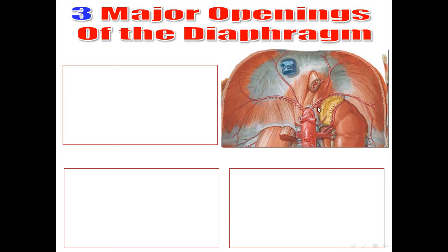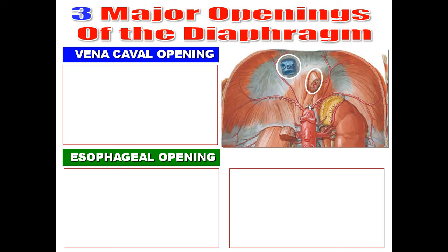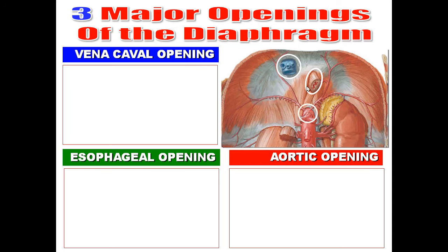The diaphragm has three major openings. The first is the vena cava opening for the inferior vena cava, the second is the esophageal opening for the esophagus, and the third is the aortic opening for the aorta. Regarding their vertebral levels — remember 8, 10, 12: the vena cava opening is opposite T8, the esophageal opening is opposite T10, and the aortic opening is opposite T12. The highest is the vena cava opening at T8, and the lowest is the aortic opening at T12.